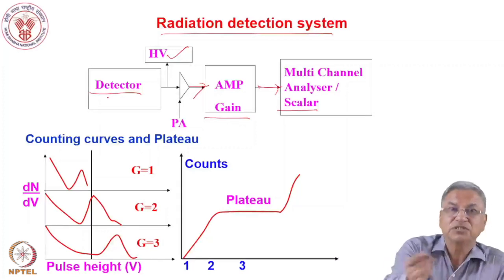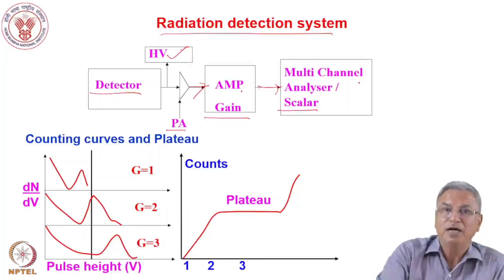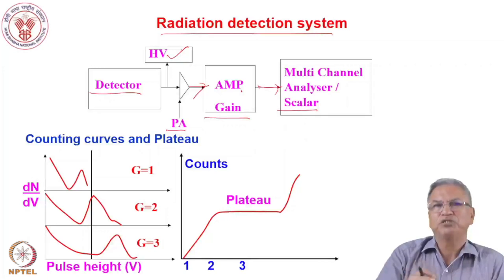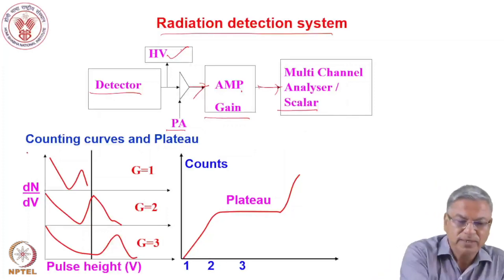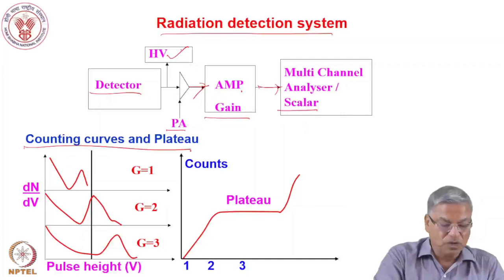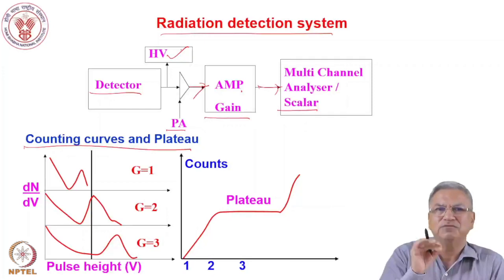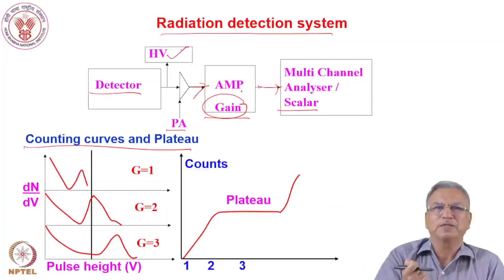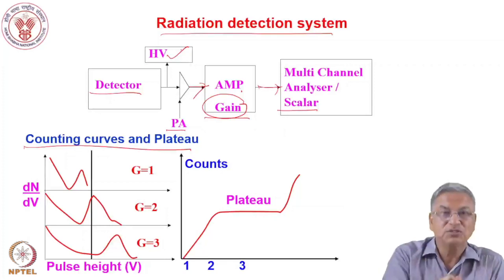Whenever we set up a detector system, we must ensure the detector is functioning in a stable manner and the settings are proper. That is why we need to generate counting curves and plateaus. Counting curve and plateau means the detector is giving you proper results. There is a quantity called gain — the amplification factor. The extent of amplification must ensure you are counting the signal and not the noise.